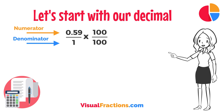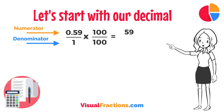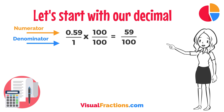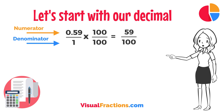So, 0.59 times 100 gives us 59, and 1 times 100 gives us 100. This translates 0.59 to the fraction 59 over 100.